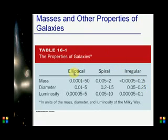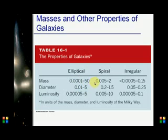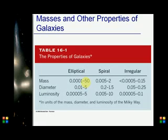The mass of elliptical galaxies compared to the mass of our Milky Way ranges from 0.0001 to 50 Milky Way masses. Spiral galaxies range from 0.005 to 2 Milky Way masses. Elliptical galaxies have both the highest masses and the biggest range — from very small to very very large.